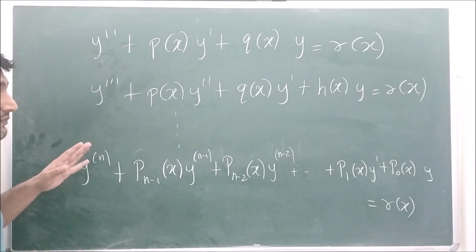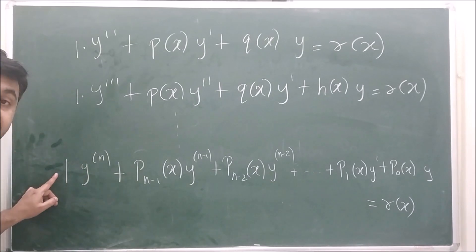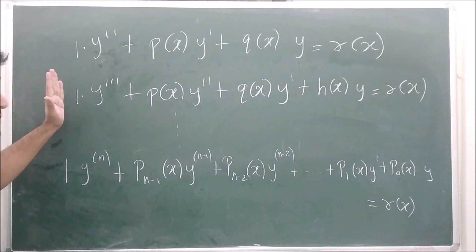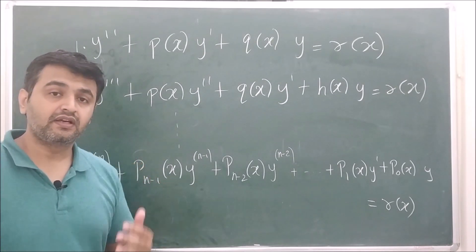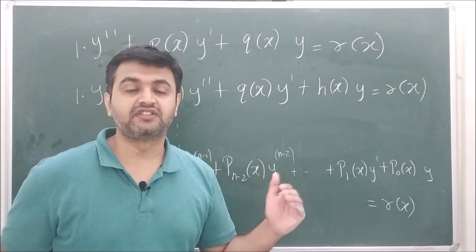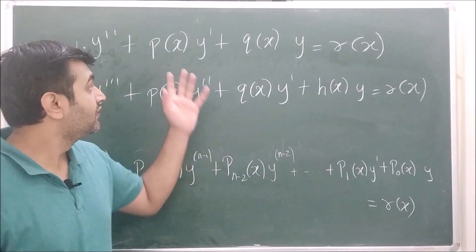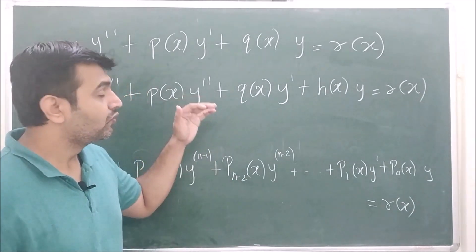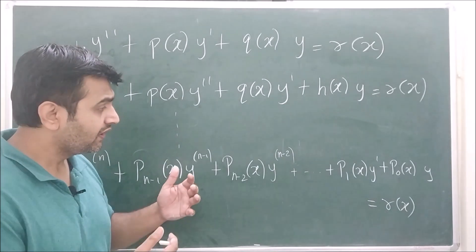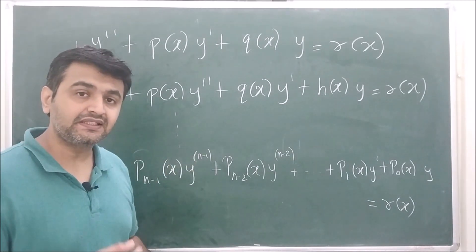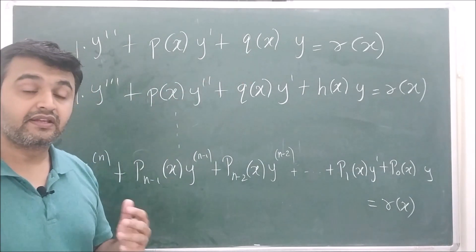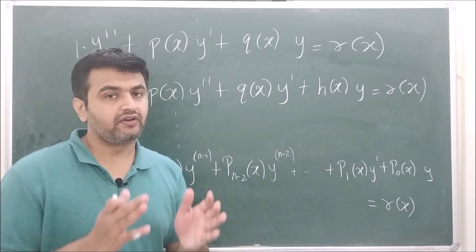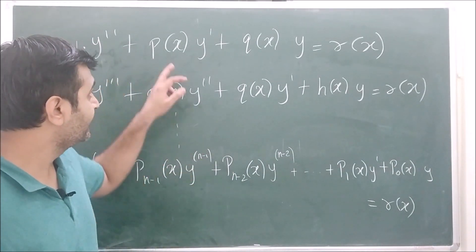Always make sure to keep the leading coefficient as 1; if it is not 1, divide through first. For our course, we will restrict the coefficient functions p, q, etc. to continuous functions of x. We need continuity because at many places we will be integrating these coefficients, and by Riemann's theory the integration of a continuous function always exists. So we restrict ourselves to continuous functions in all scenarios.